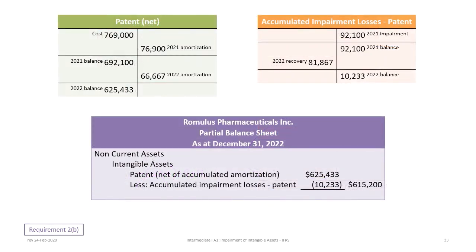At the end of the day, the patent account balance is $625,433, accumulated impairment losses are $10,233, for a carrying value of $615,200. On the balance sheet at December 31st, 2022: patent balance $625,433, less accumulated impairment losses $10,233, for a carrying value of $615,200.